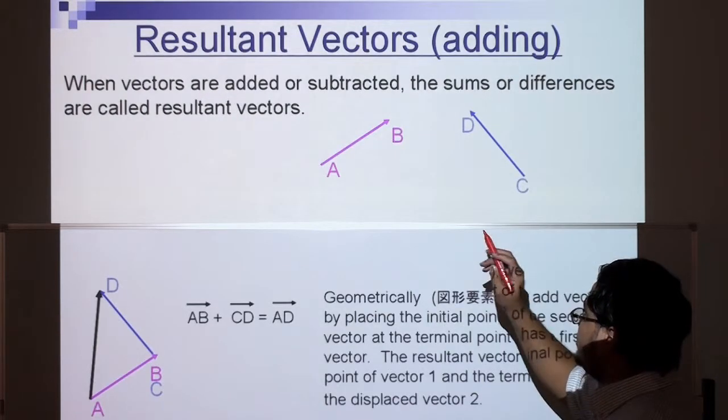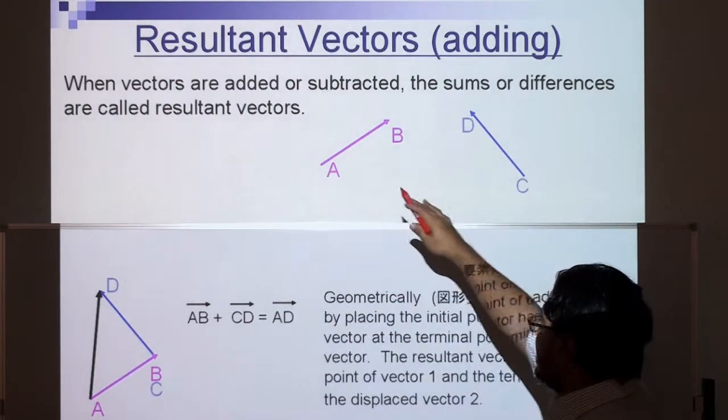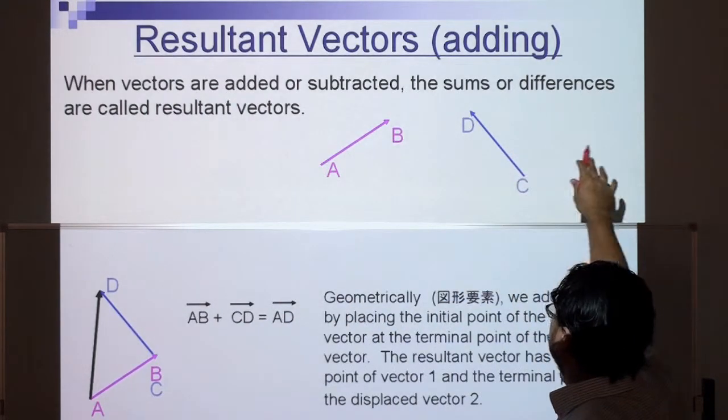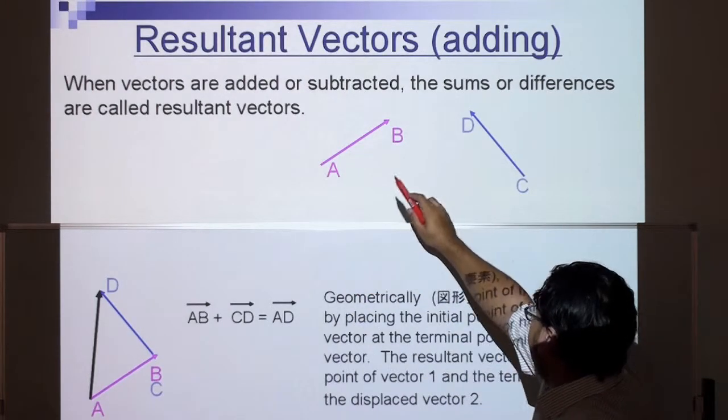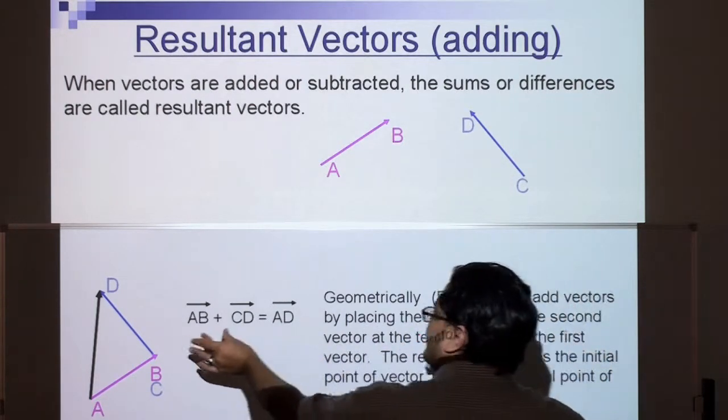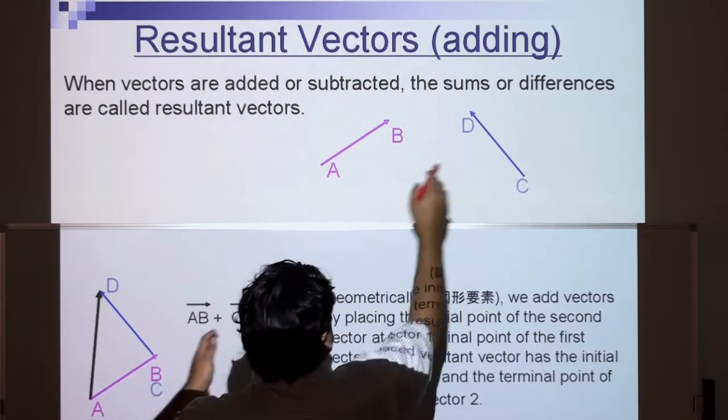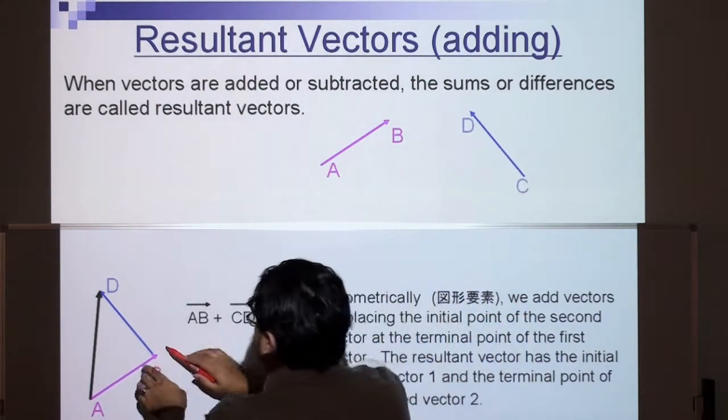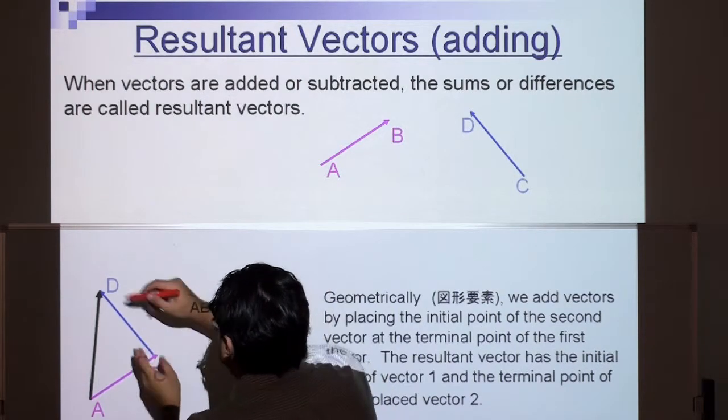Let's move on to the resultant vector, especially when we're doing addition. When vectors are added or subtracted, the sums or differences are called resultant vectors. Now have a look at this vector AB and the other one CD. So when we add vector AB plus CD, we take CD here, the initial point goes on the terminal point of AB.